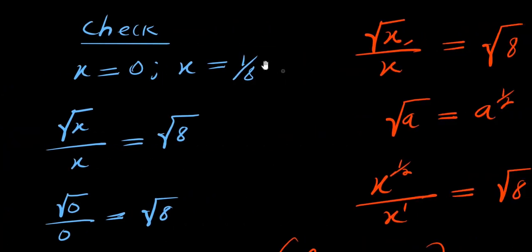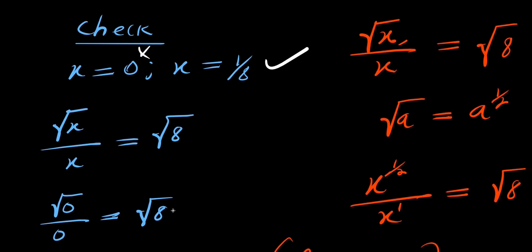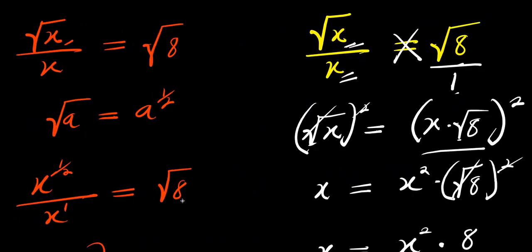So this is the only solution that satisfies this equation — x equals 1 over 8. x equals 0 is wrong. So guys, that is it. Thank you and goodbye.